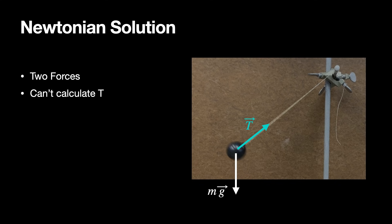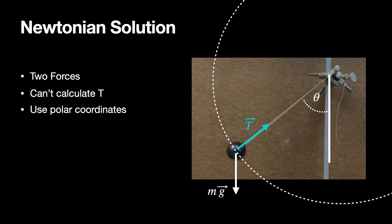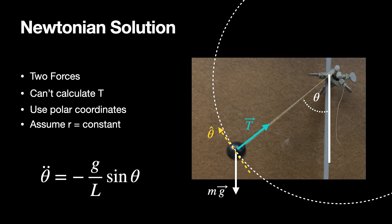One way to solve this problem is to use polar coordinates, where I have the angular position of the ball. The r-value of the polar coordinates doesn't change — it's constant. So I can just look at the motion in the theta-hat direction. The tension doesn't do anything in that direction, so I can ignore it and find the component of the gravitational force in the theta direction. You have to know something about the acceleration in polar coordinates, which makes it a bit more complicated — still not a trivial problem.